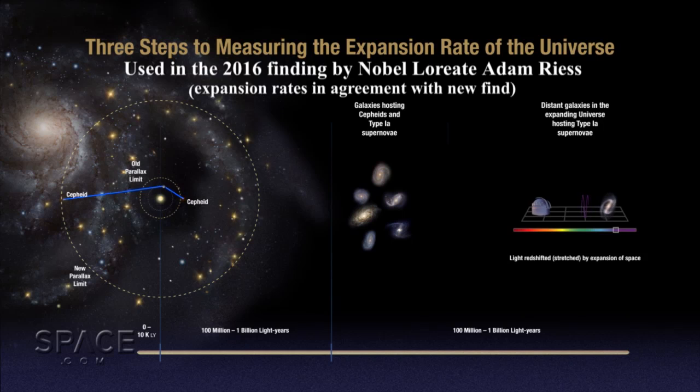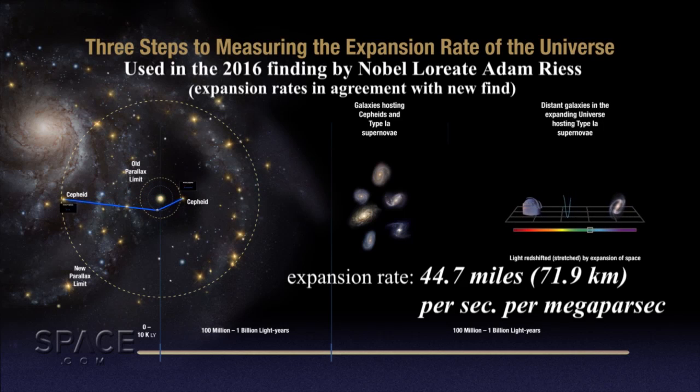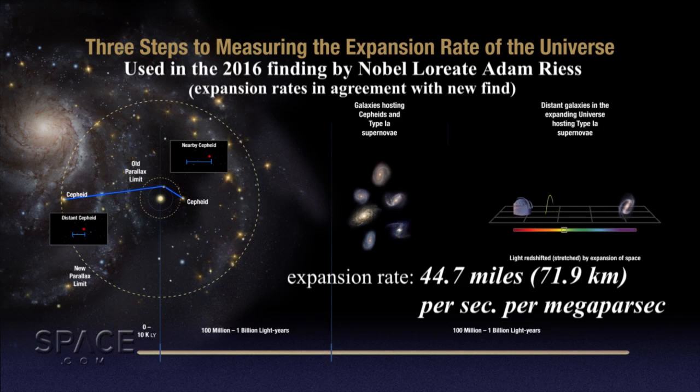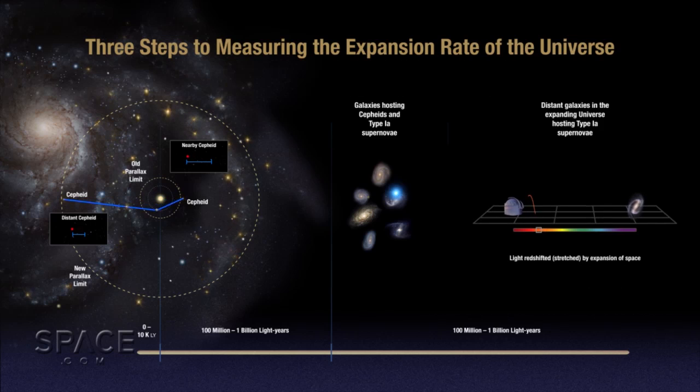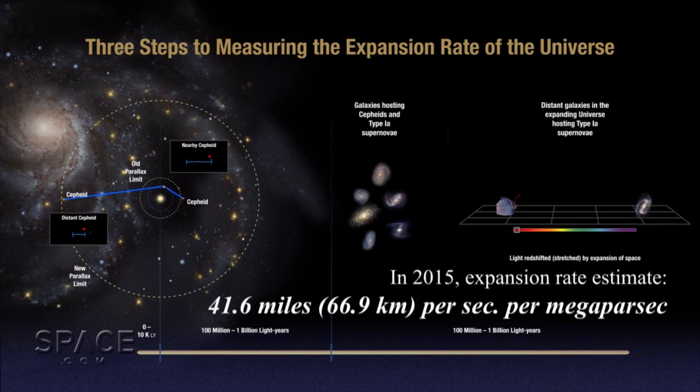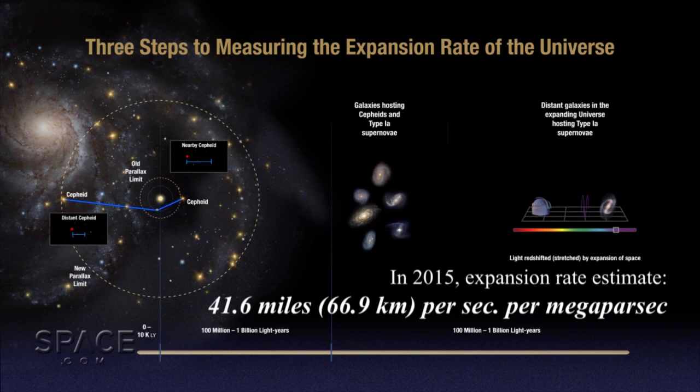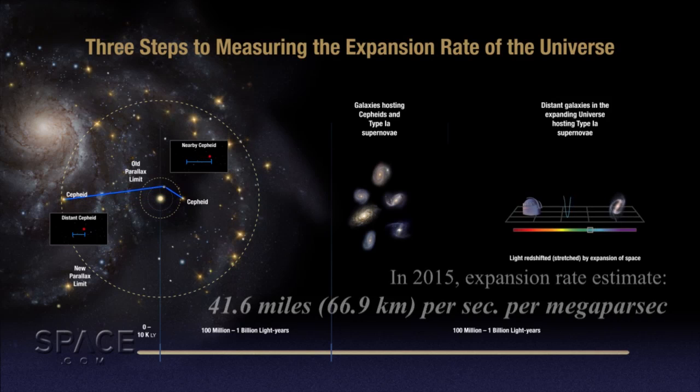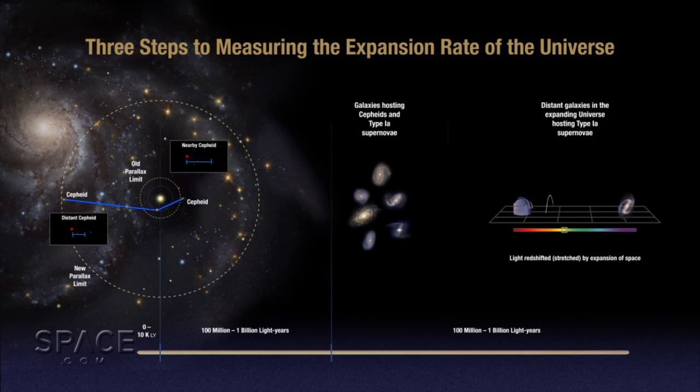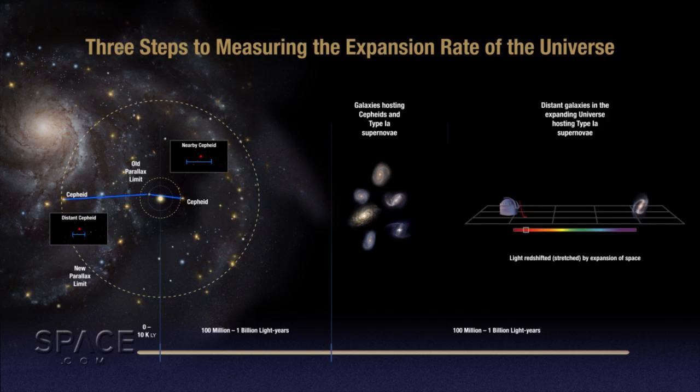The new finding is in agreement with another calculation of the Hubble constant that was announced last year. But these two measurements are considerably higher than an estimate of the Hubble constant announced in 2015. Now, scientists want to know why these estimates don't agree.